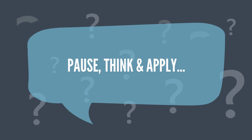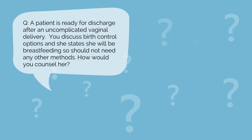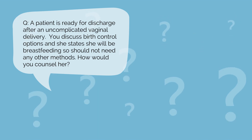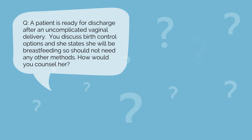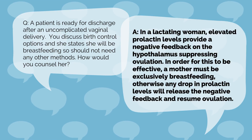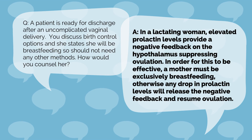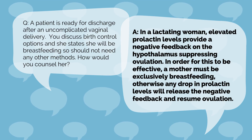Now let's pause, think, and apply. A patient is ready for discharge after an uncomplicated vaginal delivery. You discuss birth control options and she states she will be breastfeeding, so she should not need any other methods. How would you counsel her? In a lactating woman, elevated prolactin levels provide a negative feedback on the hypothalamus, suppressing ovulation. In order for this to be effective, a mother must be exclusively breastfeeding. Otherwise, any drop in prolactin levels will release negative feedback and resume ovulation. It is important to remind patients that they will ovulate before their first menstrual cycle, indicating return of fertility.